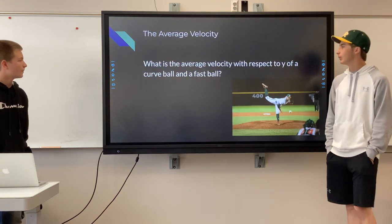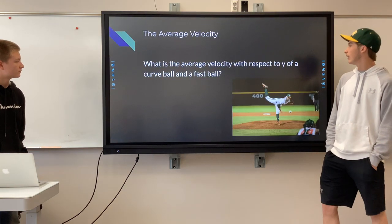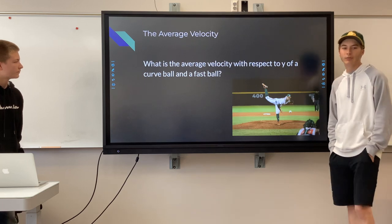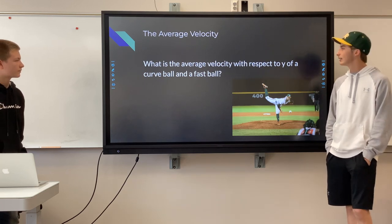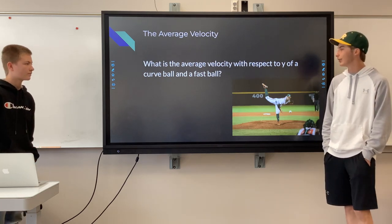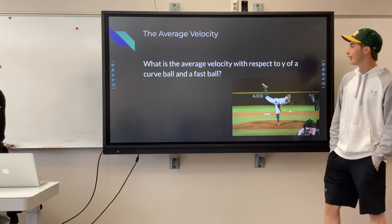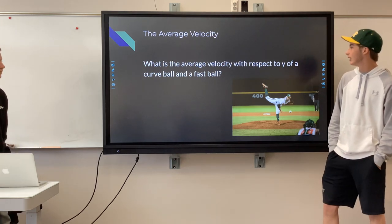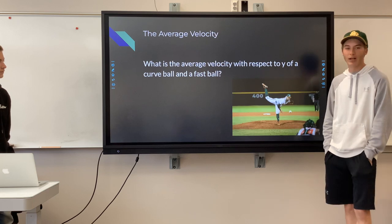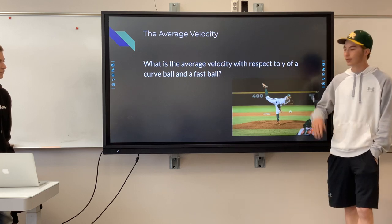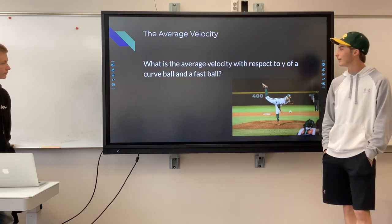So 13.891 feet per second is the rate at which the distance between the runner and the ball is increasing when the runner is 54 feet down the line. Our next topic was average velocity. We couldn't do average velocity on the x-axis due to some complications with Capstone, so we decided to do average velocity with respect to the y-axis — the up and down movement of a curveball and a fastball.